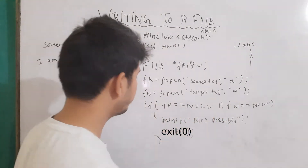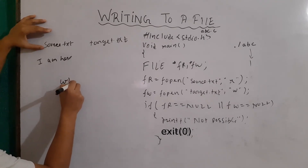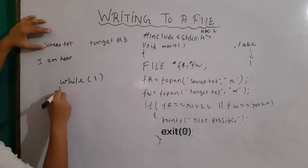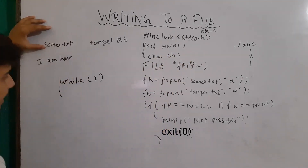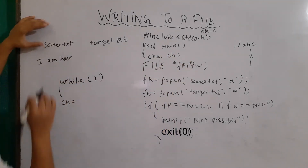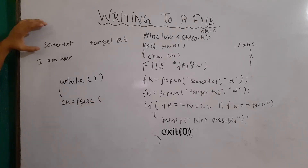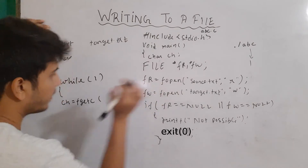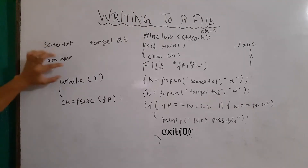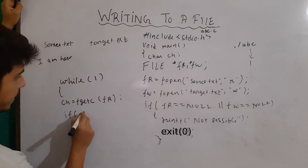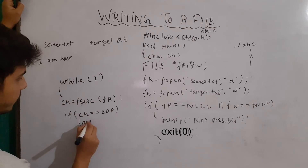But let's say this condition is false — in that case I have to write each and every character of source.txt to the target file. So I will use an infinite loop. Since I have to read input, I declare char ch. Then I write ch = fgetc(fr) to read the character. Then I check whether this is end-of-file or not: if ch == EOF, then we break out of the loop.